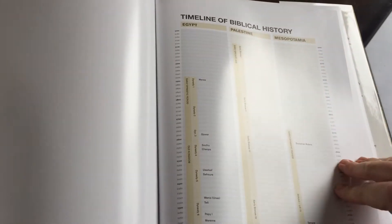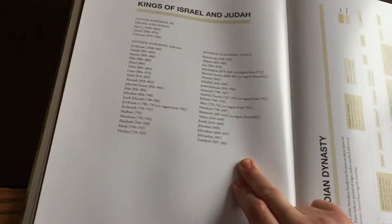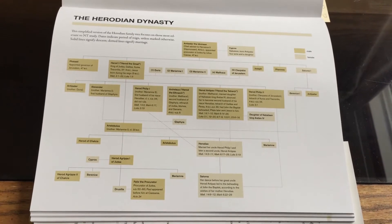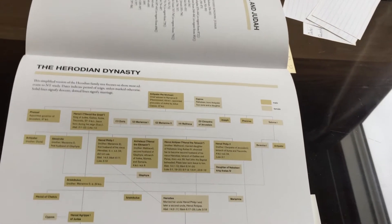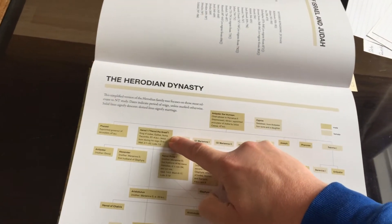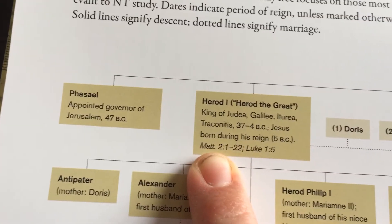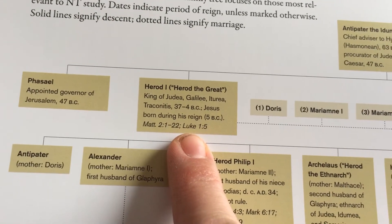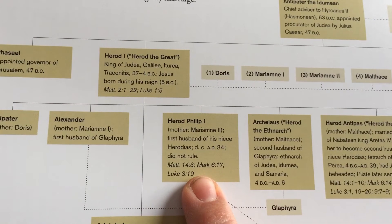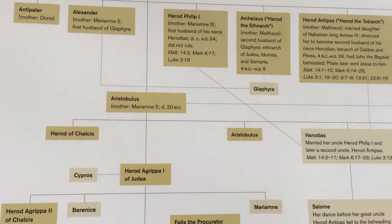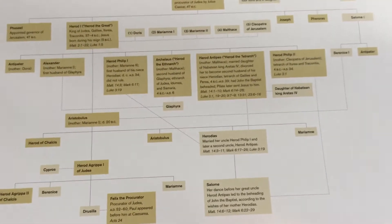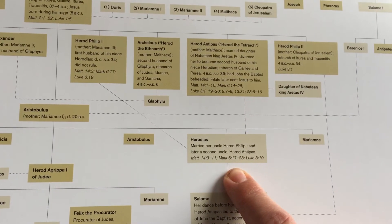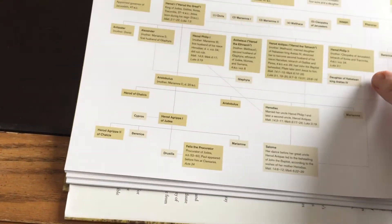You've got the timeline of Egypt lining up with the timeline of Palestine and Mesopotamia, the kings of Israel and Judah in order, and the Herodian dynasty — don't look at this unless you want to be grossed out, but it shows how messed up and interconnected all the royal people were. So Herod the Great is the Herod in Matthew 2 and Luke 1, Luke 3 has Herod Philip II, Felix who shows up in Acts 24 is related to the Herods, and Herodias is the one who got John the Baptist killed.